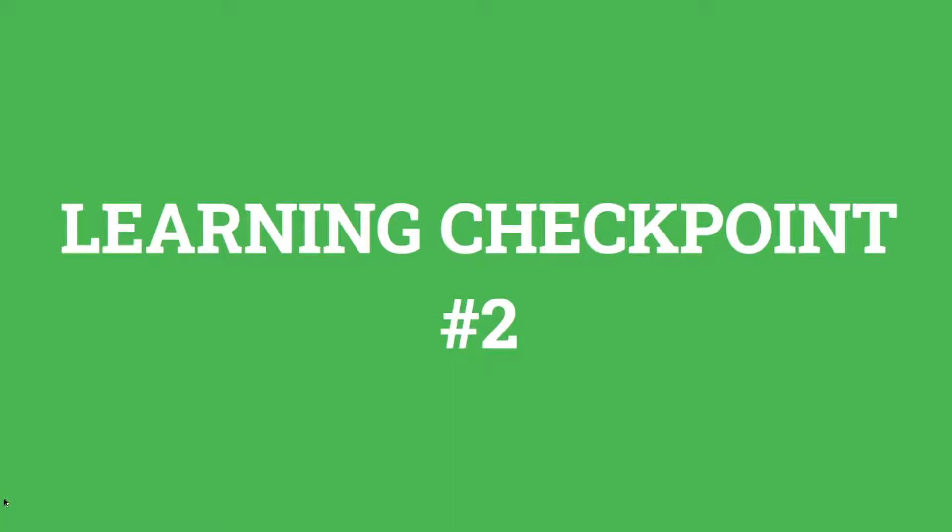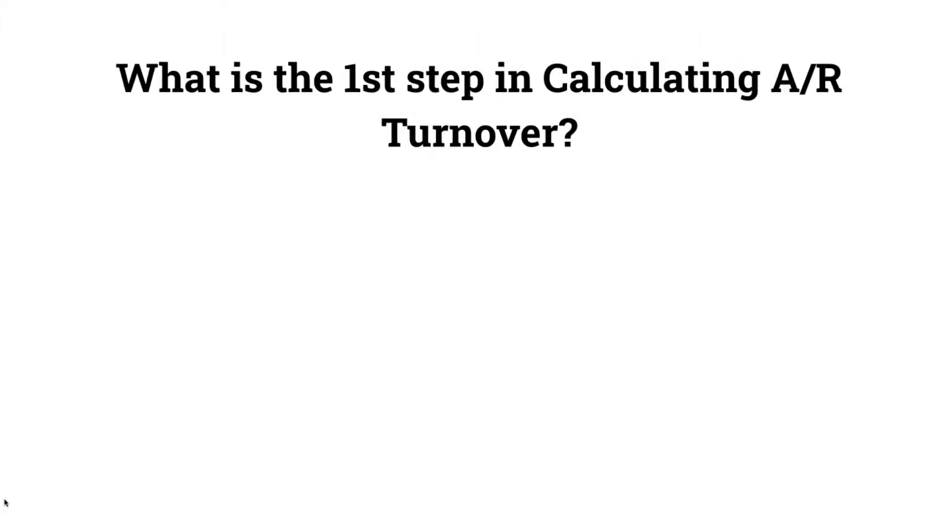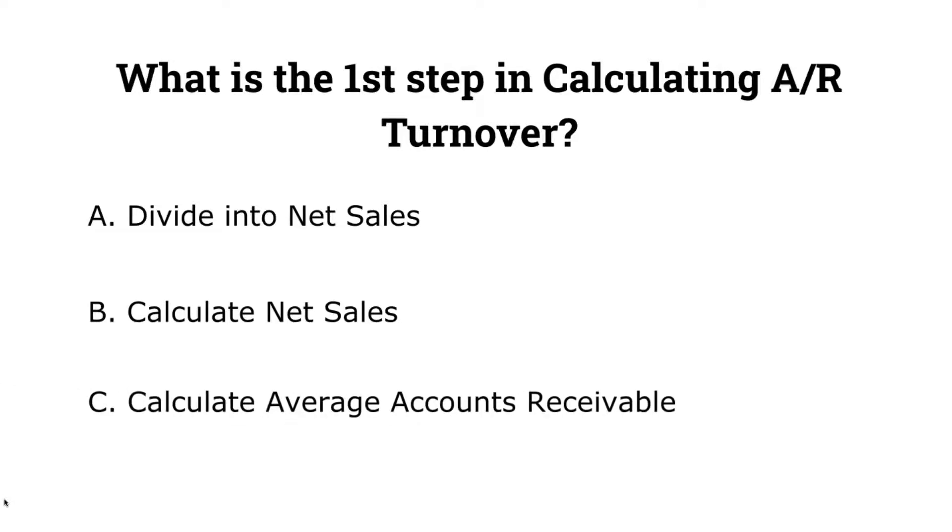Okay. Learning checkpoint number two. What is the first step in calculating accounts receivable turnover ratio? Is it A, you divide it into net sales? B, you calculate net sales? Or is it C, calculate average accounts receivable? Again, what is the first step in calculating accounts receivable turnover ratio? Is it A, B, or C? Comment your answers below.